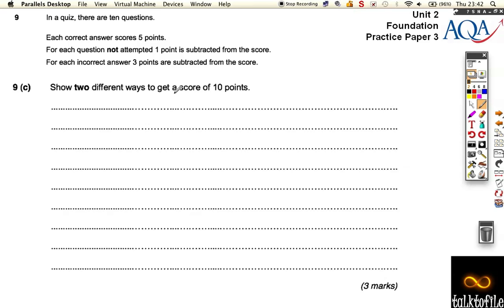Well, let's just try a couple. If I score five correct that gives me twenty five points, but if I get five incorrect that is minus fifteen points. So together that gives me a score of ten points. Okay, so that was five correct, five incorrect.